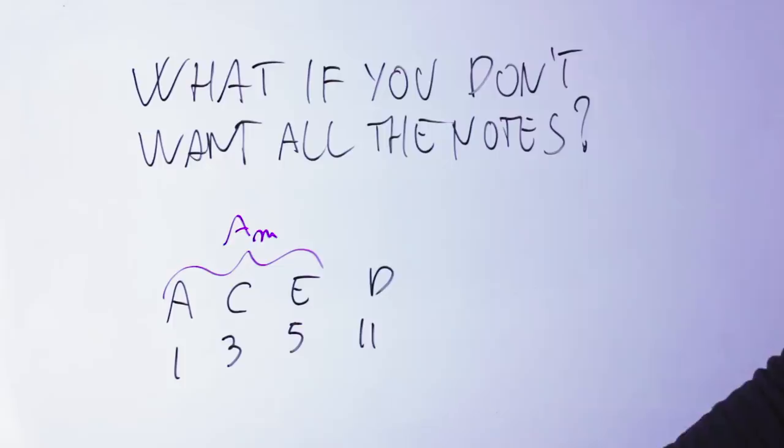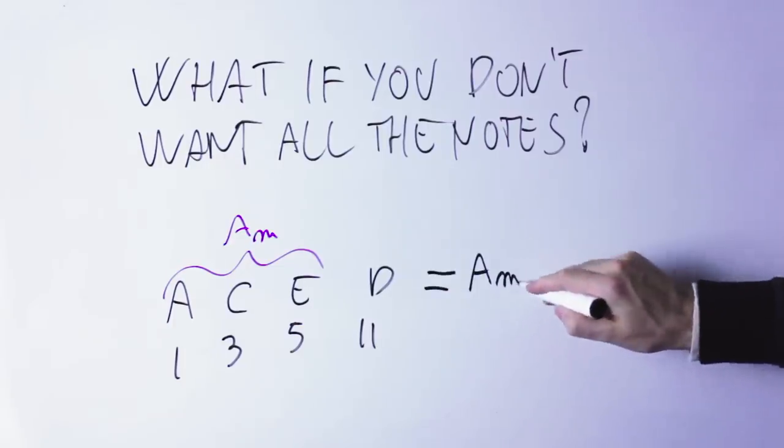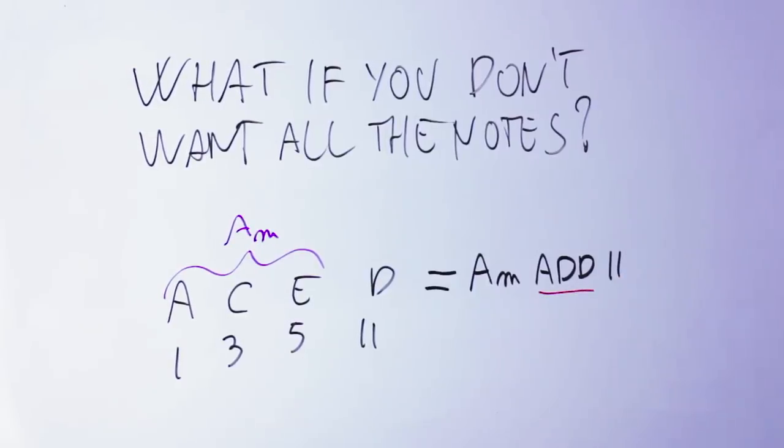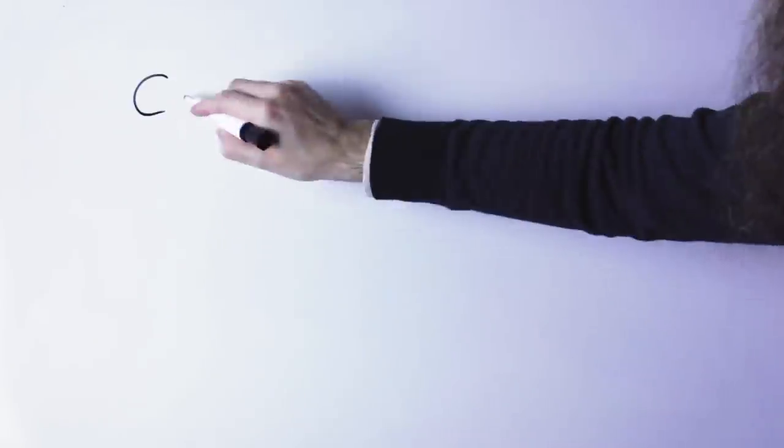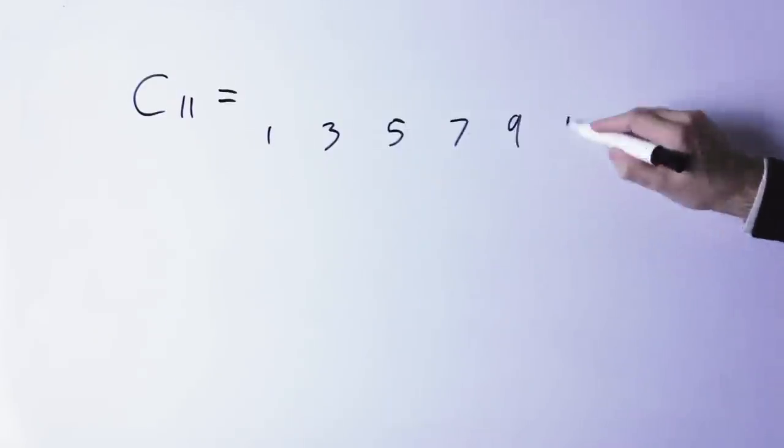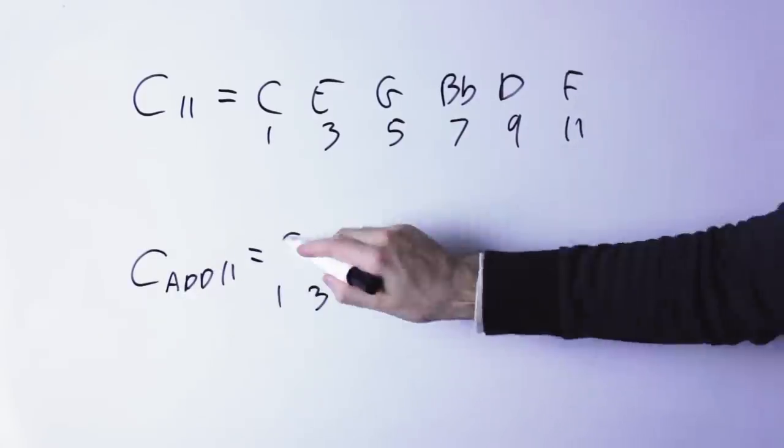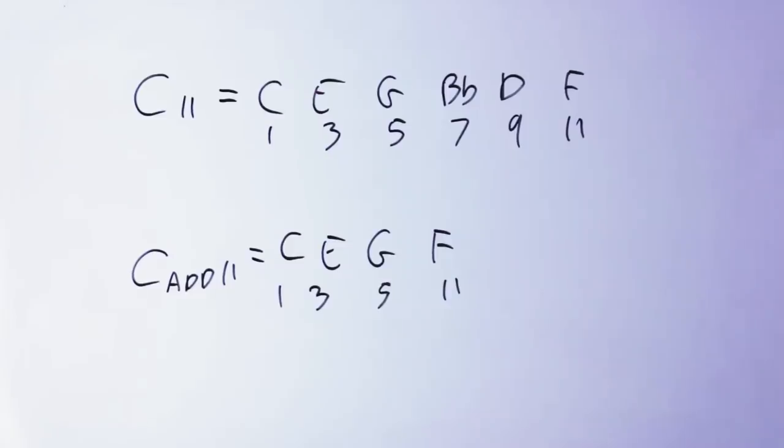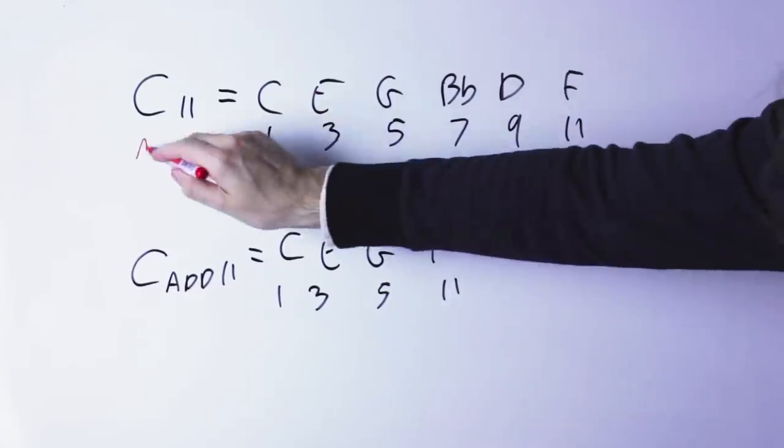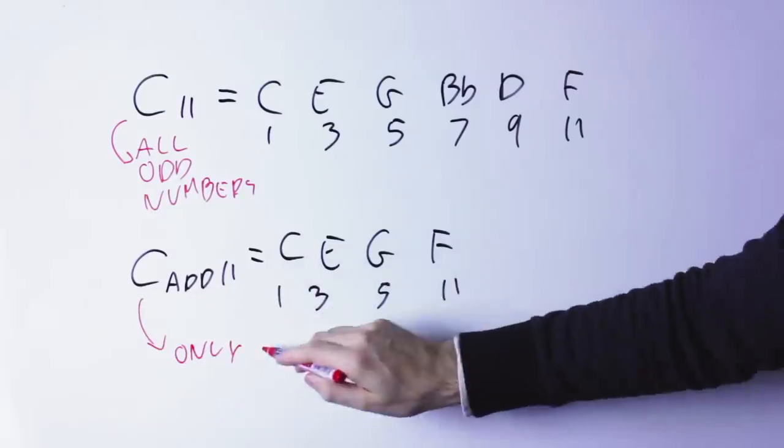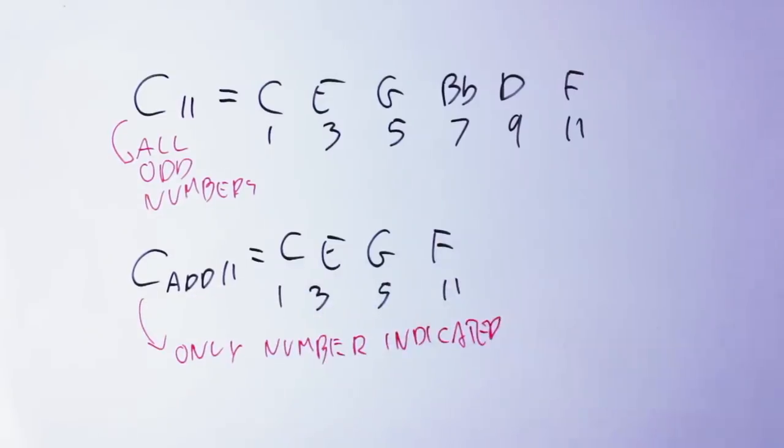In this case, you write the word ADD, A-D-D, and you call this chord an A minor ADD 11, which means just the triad notes plus the note you want. So, recapping, if you have just an odd number, you need to put in all the odd numbers up to that number 1, 3, 5, 7, etc.